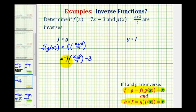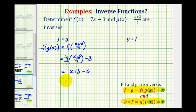And now we'll simplify. Notice here we can think of this as seven over one, so these sevens simplify to one. So we'd have the quantity x plus three minus three. So this composite function does equal x. This is good news, but we also have to show that g of f of x is equal to x.